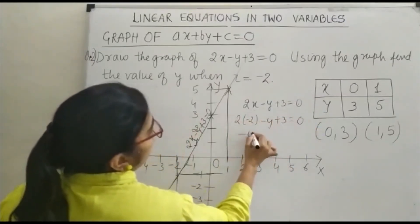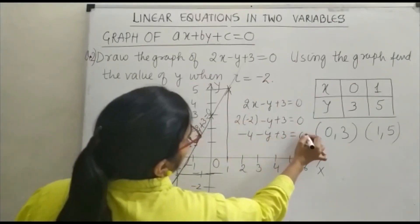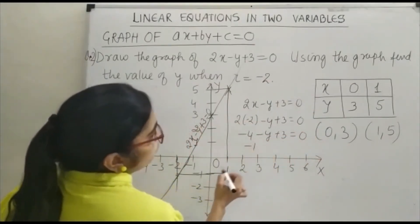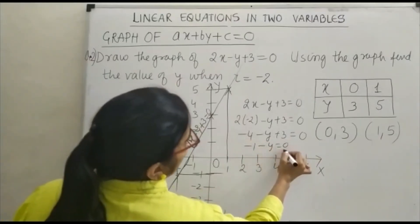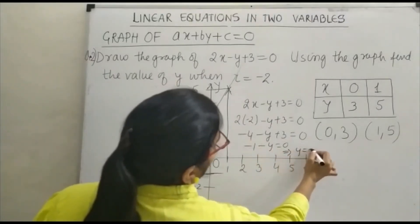Using the graph, find the value of y when x equals minus 2. That is 2(-2) minus y plus 3 equals 0, which gives minus 4 minus y plus 3 equals 0. And that is minus 1. You can see, minus 1 minus y equals 0 implies y equals minus 1.